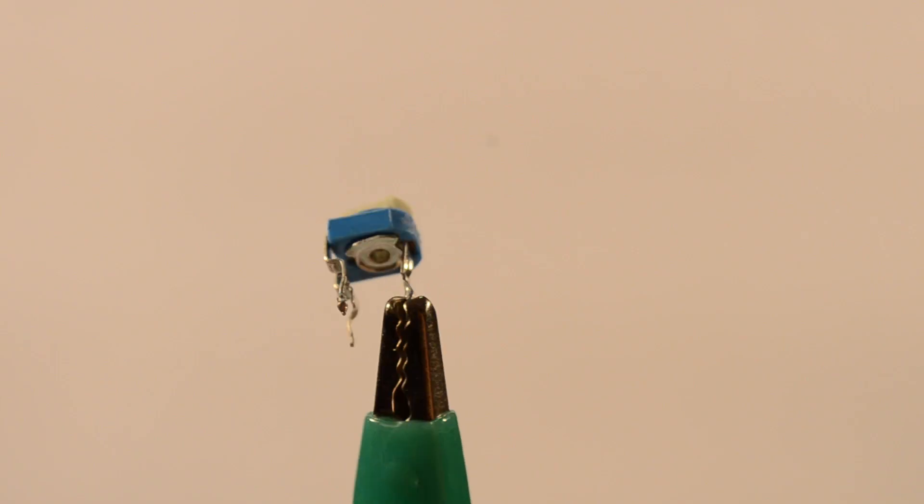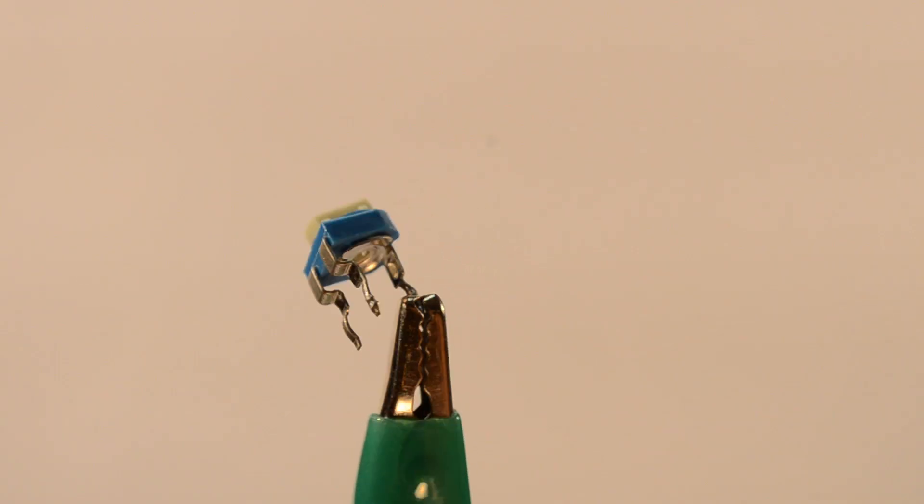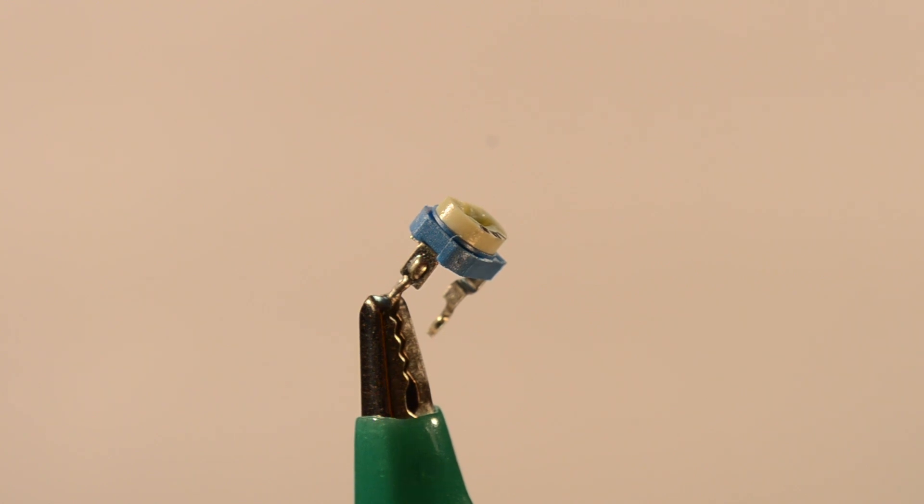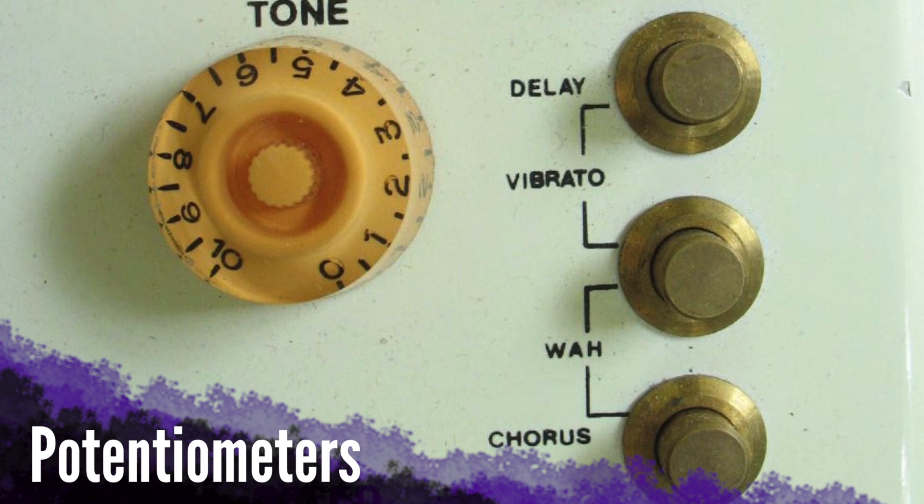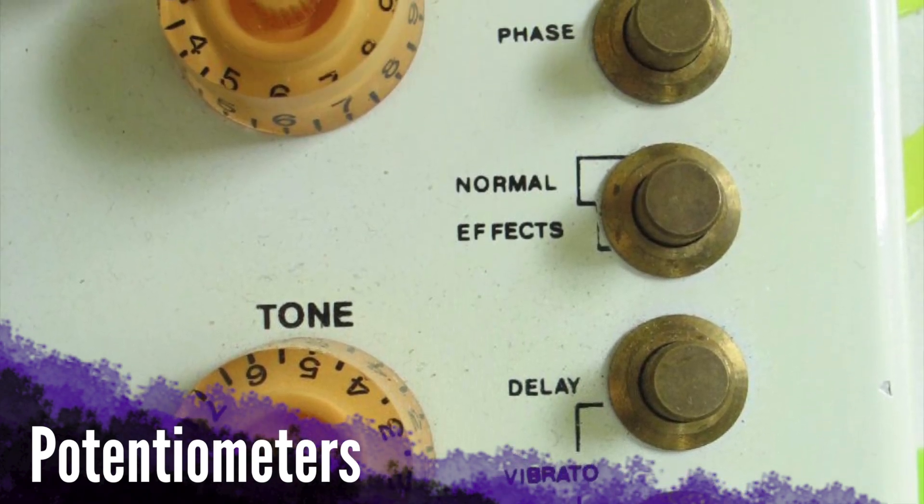Potentiometers, or pots for short, are the most commonly used form. You can find them in everything from electric guitars to home stereos. They come in different packages that vary in size, precision, and resistance value.